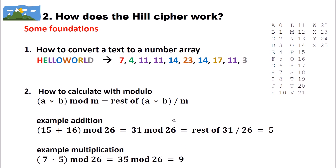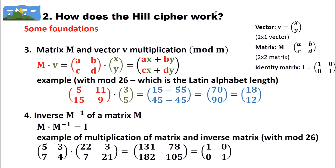With modulo 26, we only get numbers from 0 to 25. Then we need to know how matrix M and vector V multiplication modulo M works. A vector is a tuple — for instance a vector of two numbers, just x and y. A matrix is similar to a vector but can have many more values, like a 2x2 matrix with A, B, C, D.